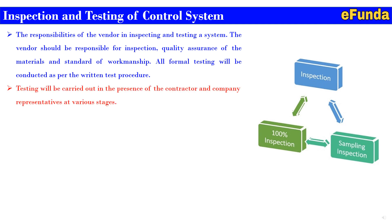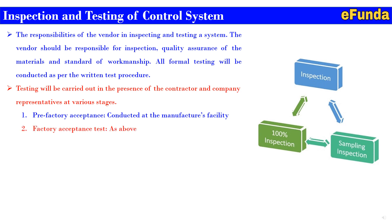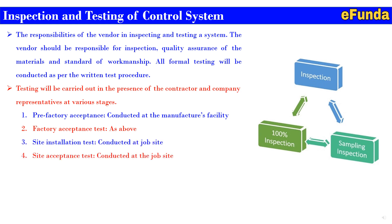Testing will be carried out in the presence of the contractor and company representative at various stages. First: pre-factory acceptance conducted at the manufacturer's facility. Second: factory acceptance test as mentioned above. Third: site installation test conducted at the job site. Fourth: site acceptance test conducted at the job site. In today's video, we will cover the first part — pre-factory and factory acceptance test — in detail.